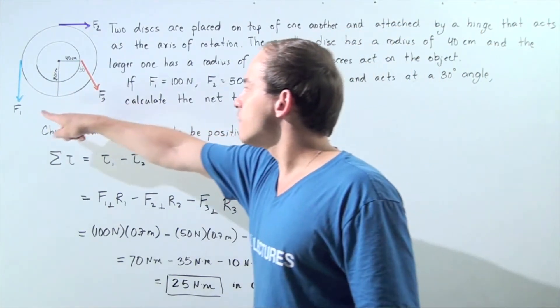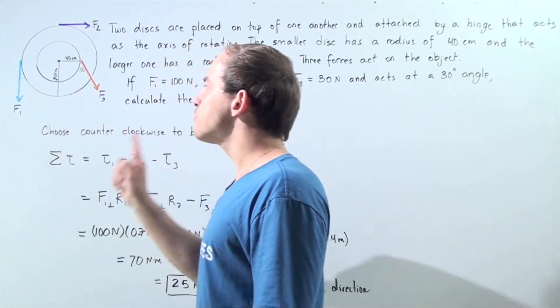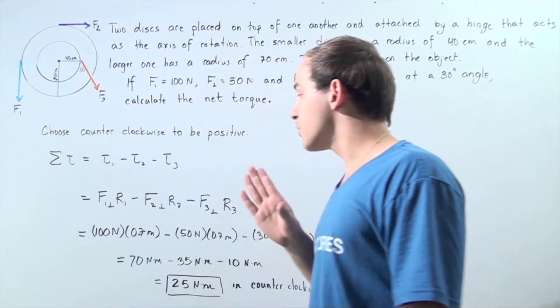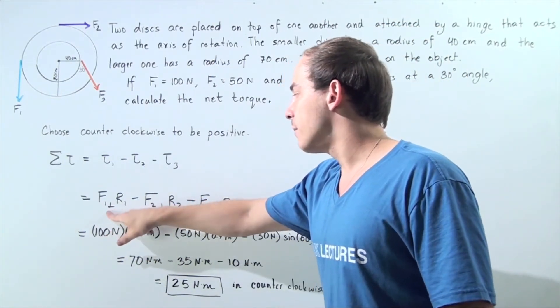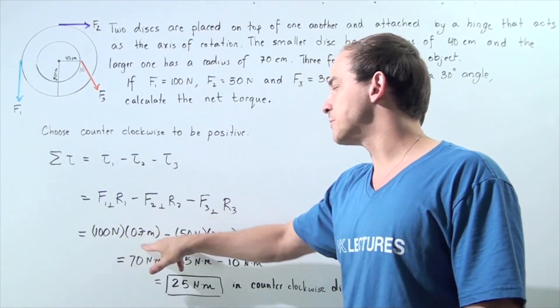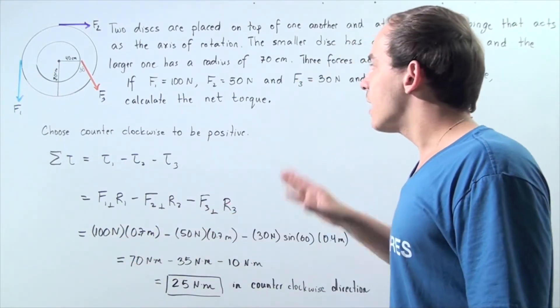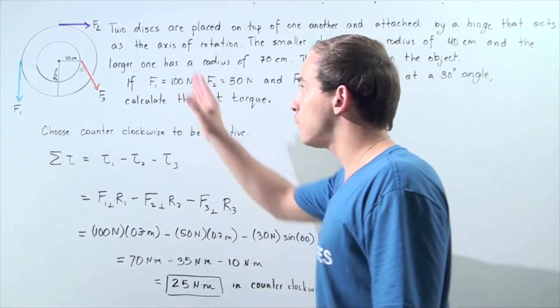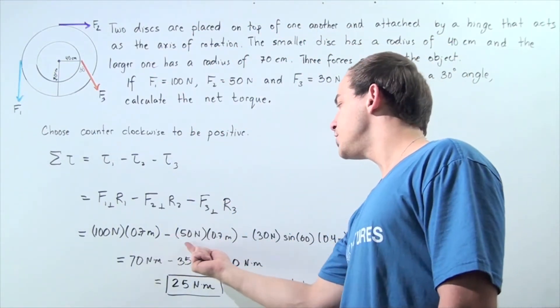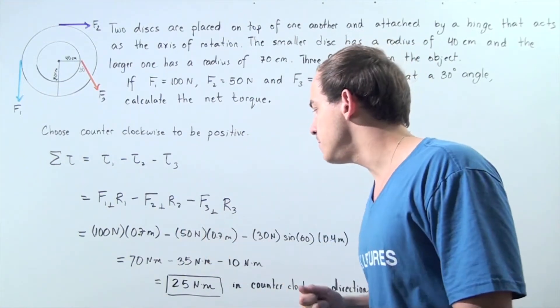Now, notice that force one is perpendicular to the radius of the larger circle. So F1 perpendicular times R1 is simply 100 newtons times 0.7 meters. The same is true for force number two, but it acts in the opposite direction. So we subtract minus 50 newtons times 0.7 meters.